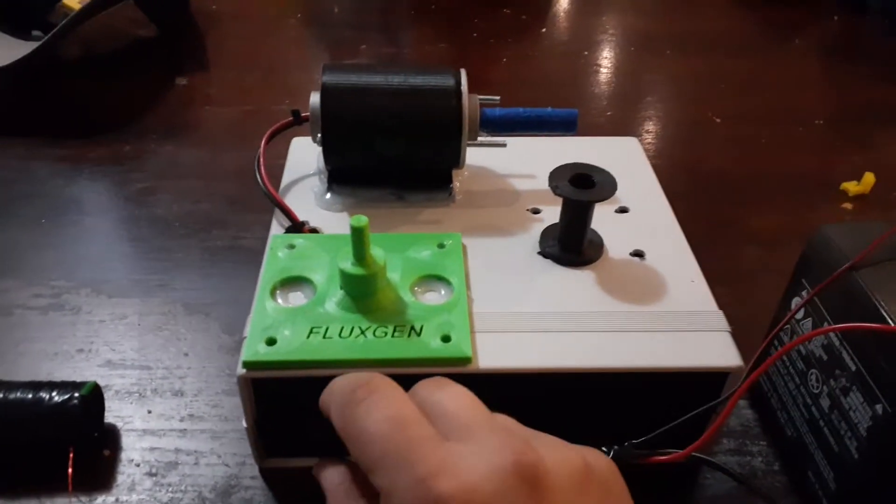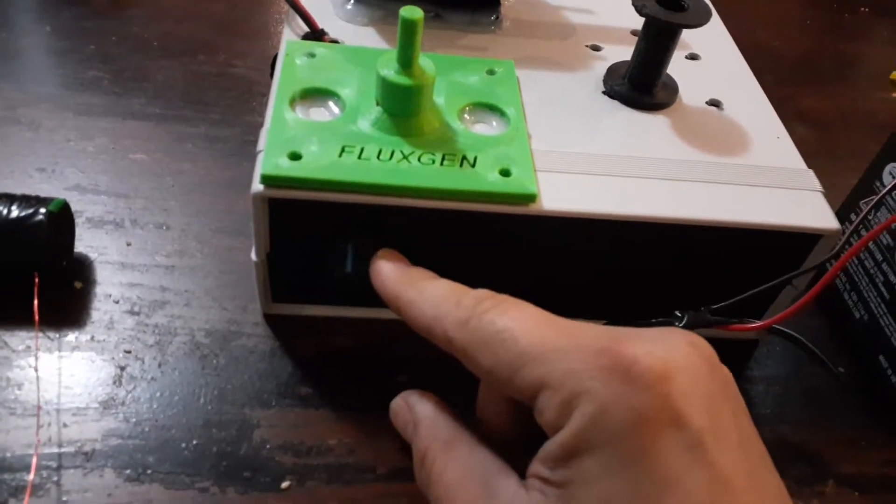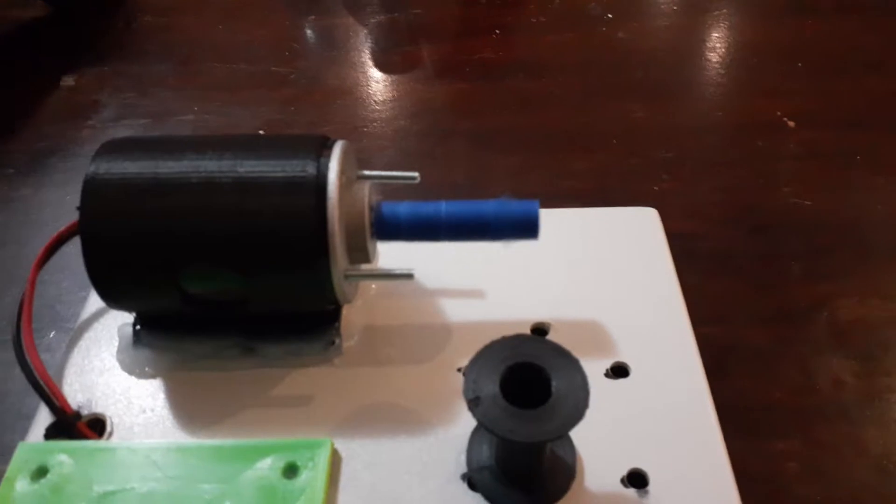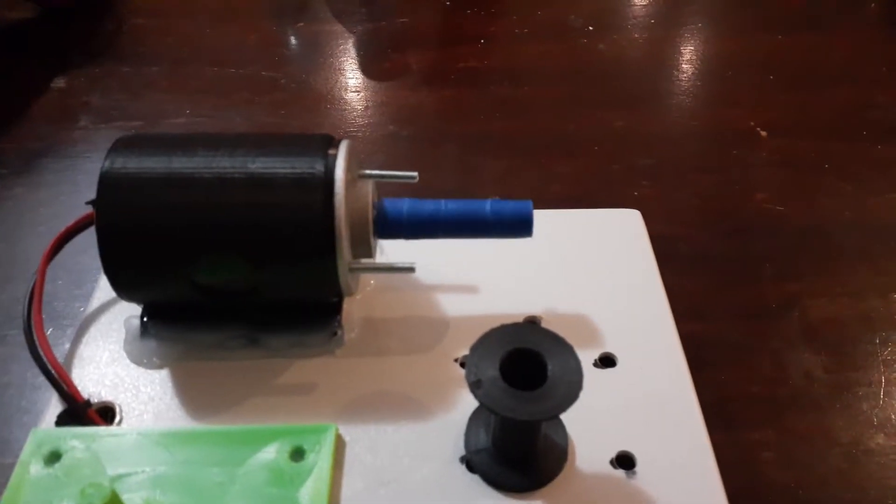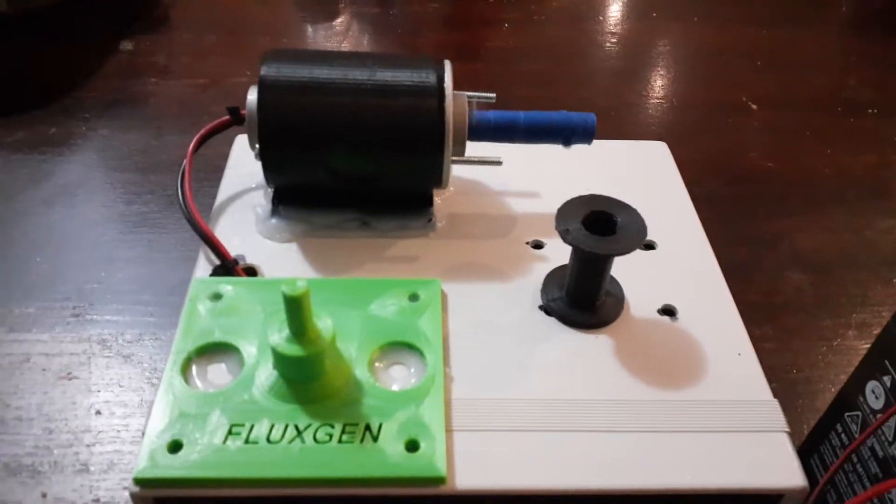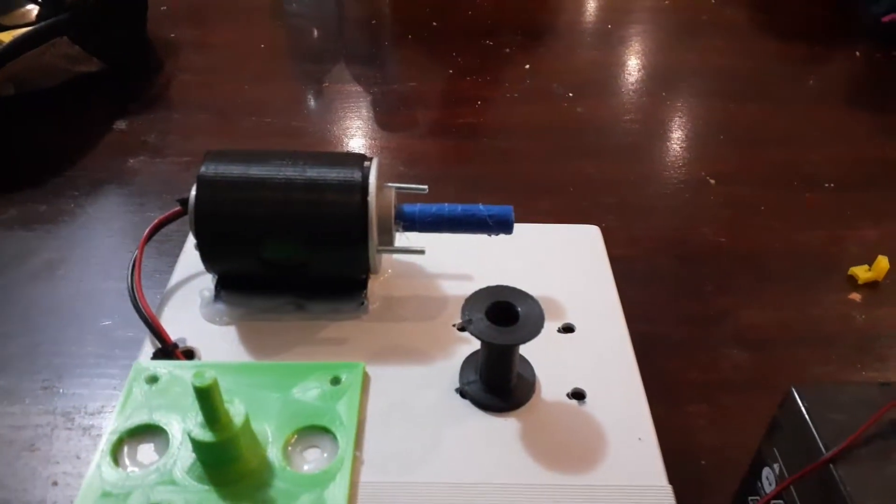One can control the RPM with the potentiometer here on the side. So you can see it spinning now. I turned up the RPM and it goes pretty fast and you have full control with the potentiometer and you can make your windings.